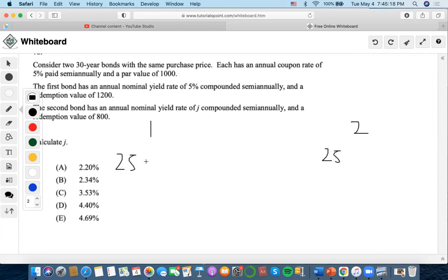Now, annual yield rate of 5% semi-annual, right? So 2.5%.